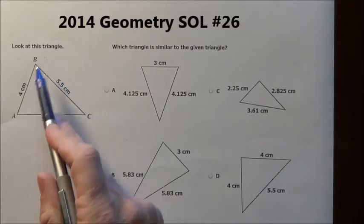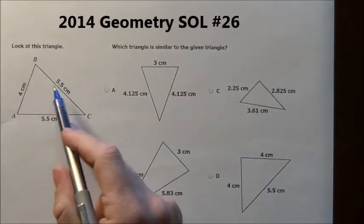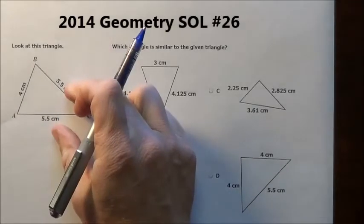Here's problem 26. It says look at this triangle. So we have it 4, 5.5, 5.5. So two of the sides are the same length.